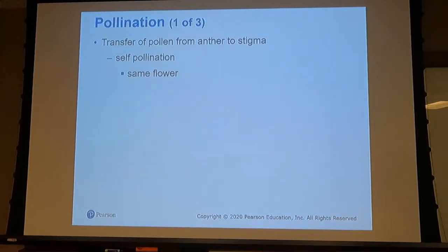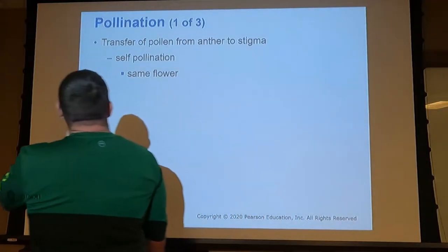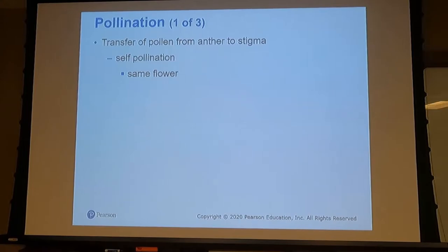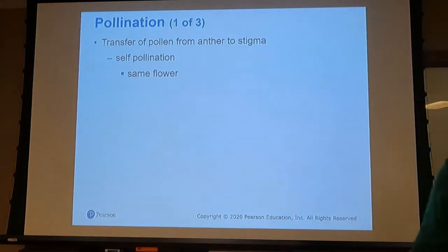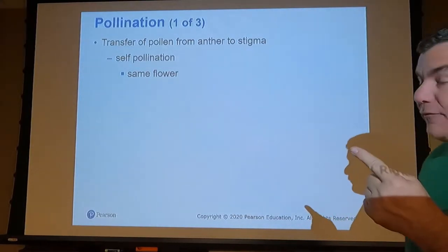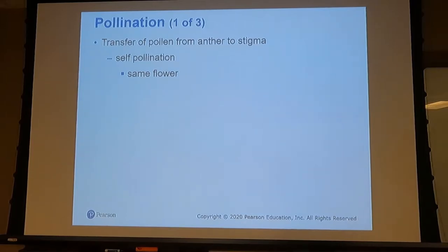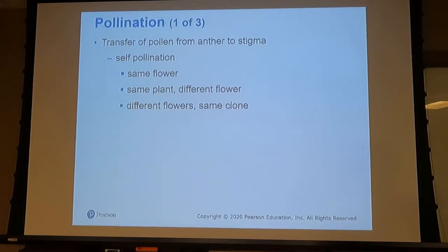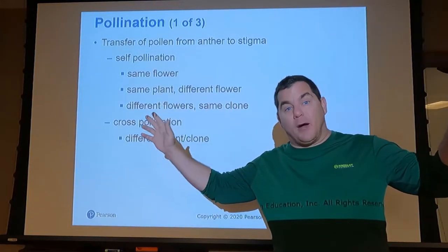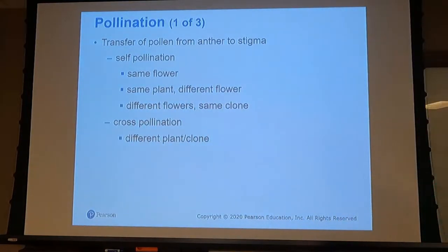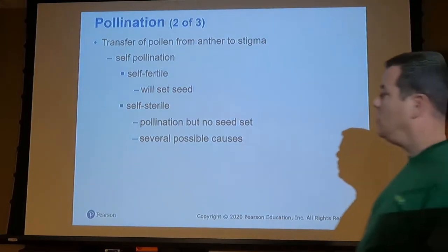For pollination there are three types. We have the transfer from the anther to the stigma. Self-pollination is where the pollen from the anther within the same flower pollinates the stigma. We can also have the same plant but a different flower, or from different flowers of the same clone. Cross-pollination is from two separate flowers with two different genetics.